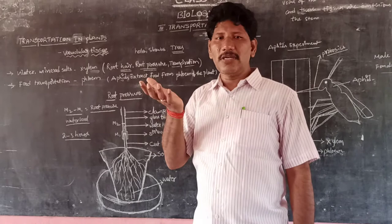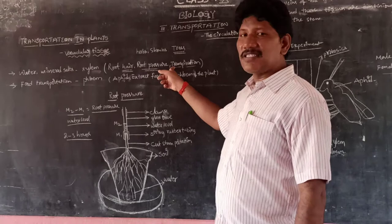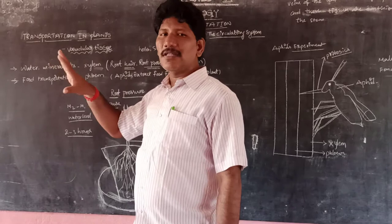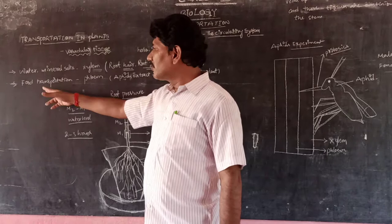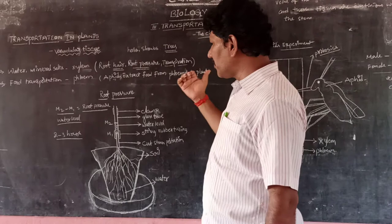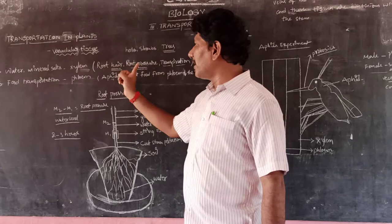When water evaporates from the leaves, it pulls ground-level water upward through the plant. This transpiration pull circulates water throughout the plant. Today's session will specifically discuss transportation in plants via root pressure, the effects experiment, transpiration, and how food is transported in the phloem tissue.